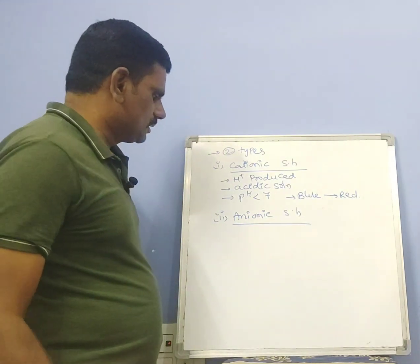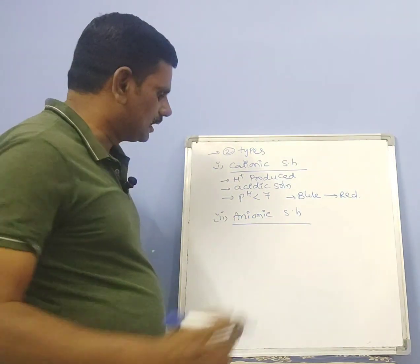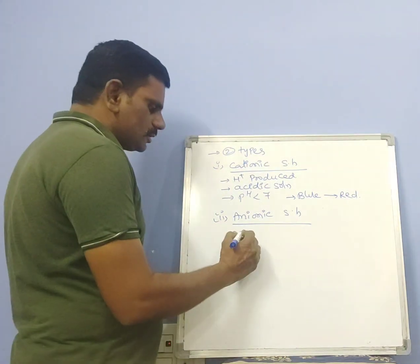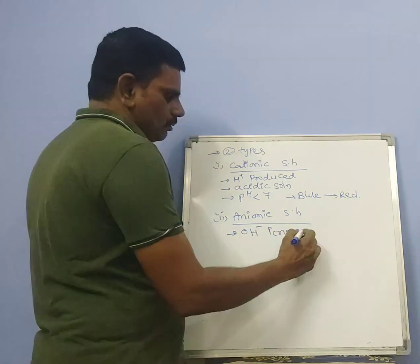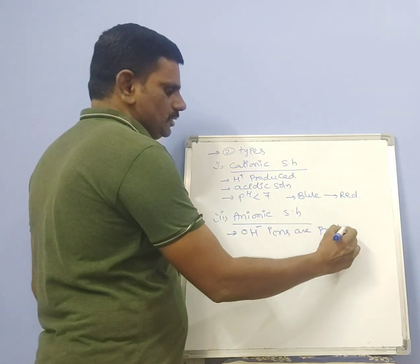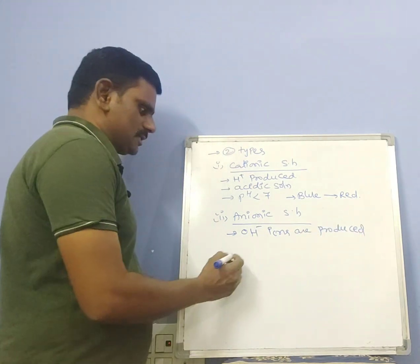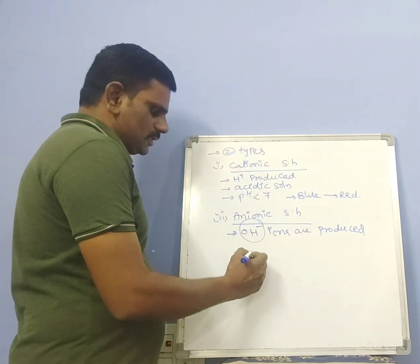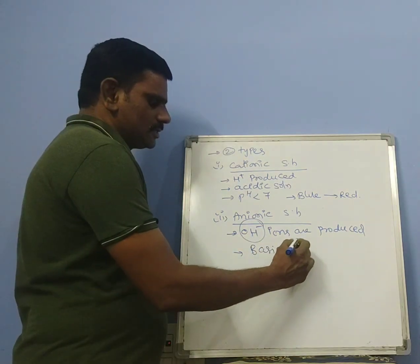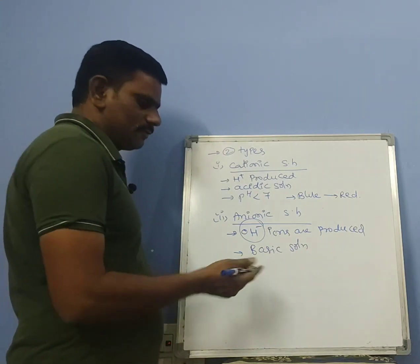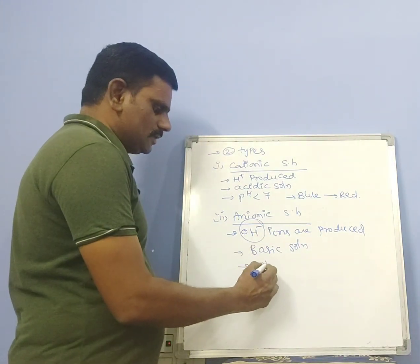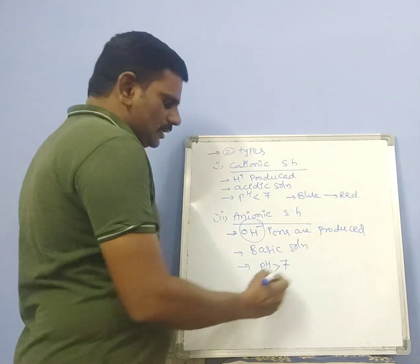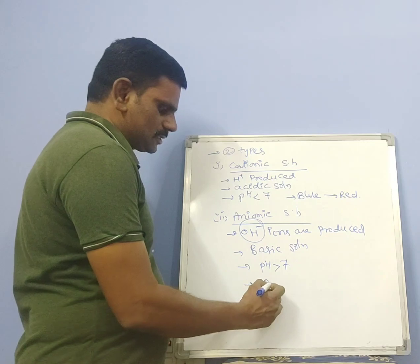In anionic salt hydrolysis, the anion reacts with H₂O to produce OH⁻ ions. When OH⁻ ions are produced in the solution, the solution is basic in nature. For a basic solution, pH is greater than 7, and red litmus paper turns blue.